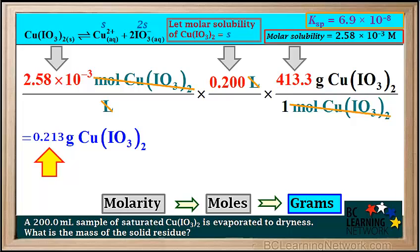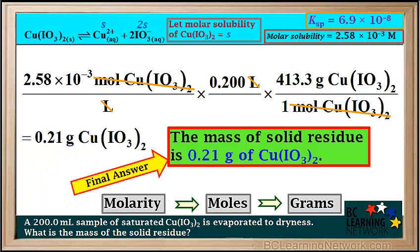Since the Ksp was only given to two significant figures, the answer must be expressed to two significant figures: 0.21 grams of Cu(IO₃)₂. Because solid Cu(IO₃)₂ is the solid residue left after evaporating, the final answer is that the mass of the solid residue is 0.21 grams of Cu(IO₃)₂.